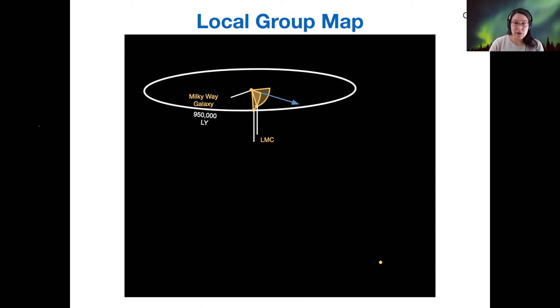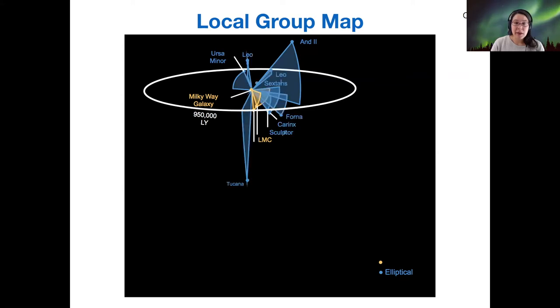Moving on to some farther field neighbors, if we go out and then up, we find this Andromeda 2 elliptical galaxy. If we go out and up again, there's another elliptical galaxy, Ursa Minor.